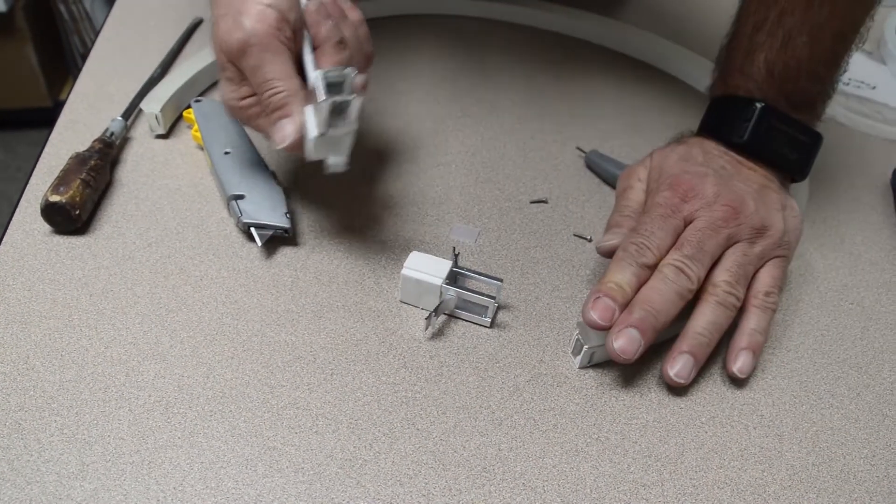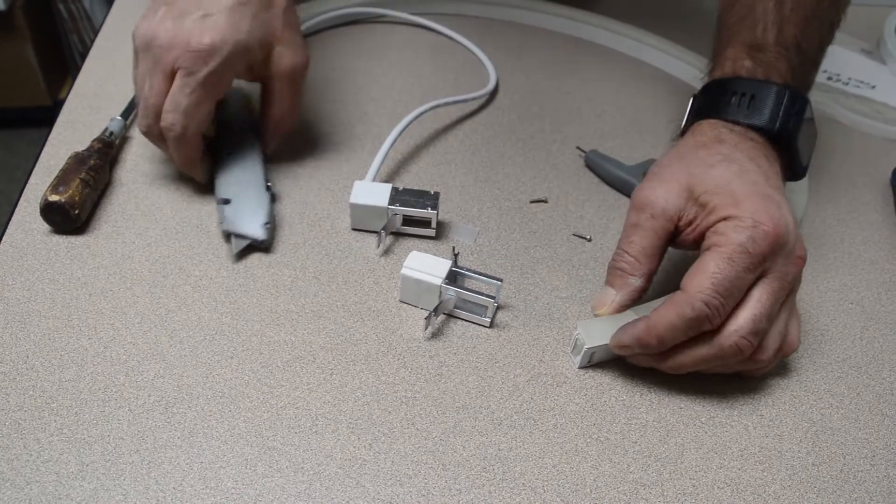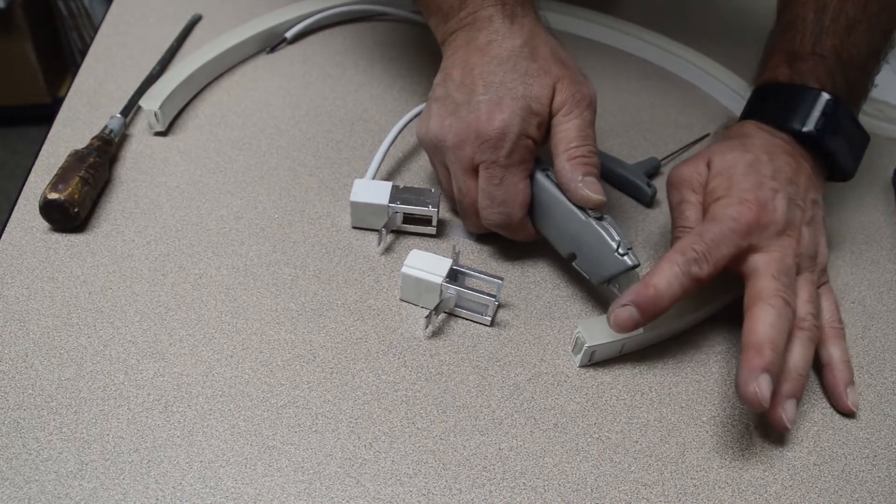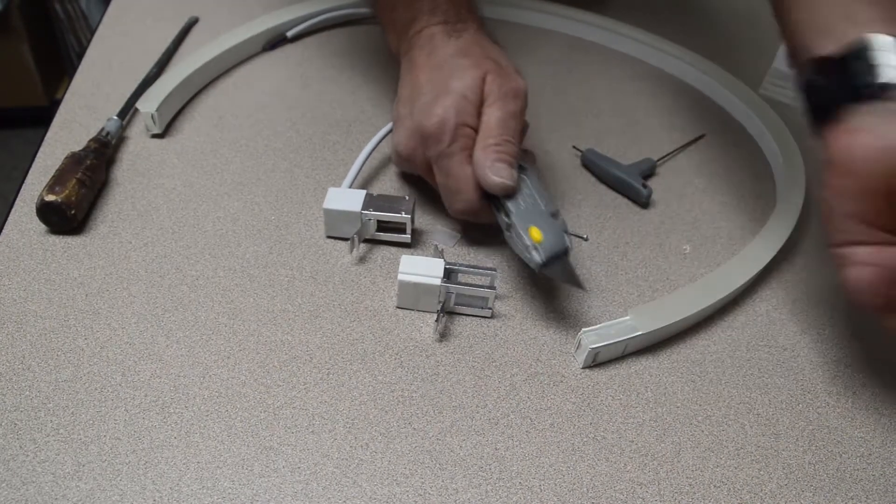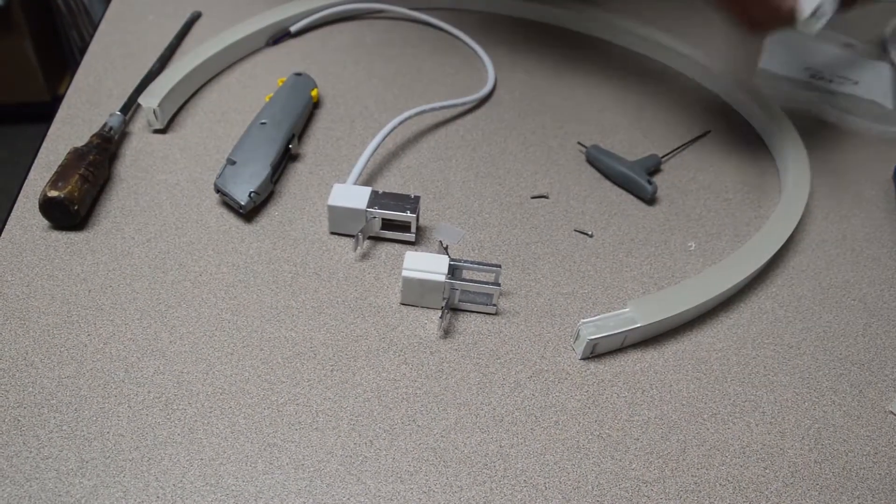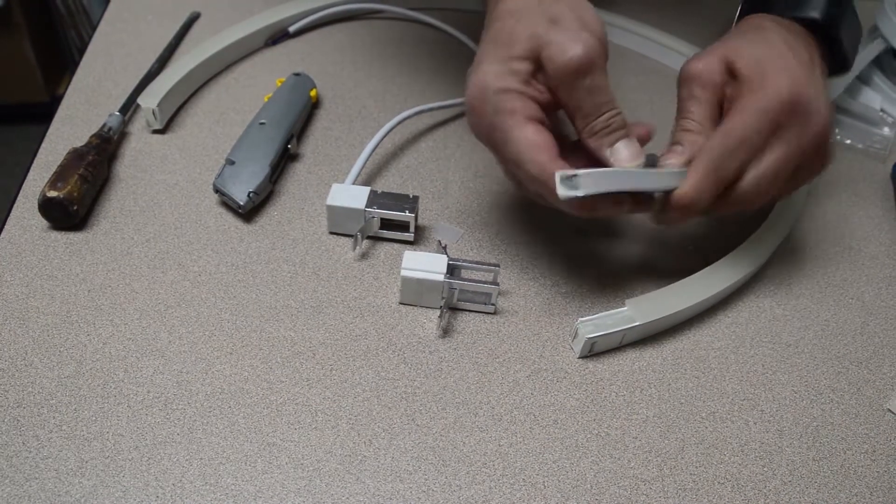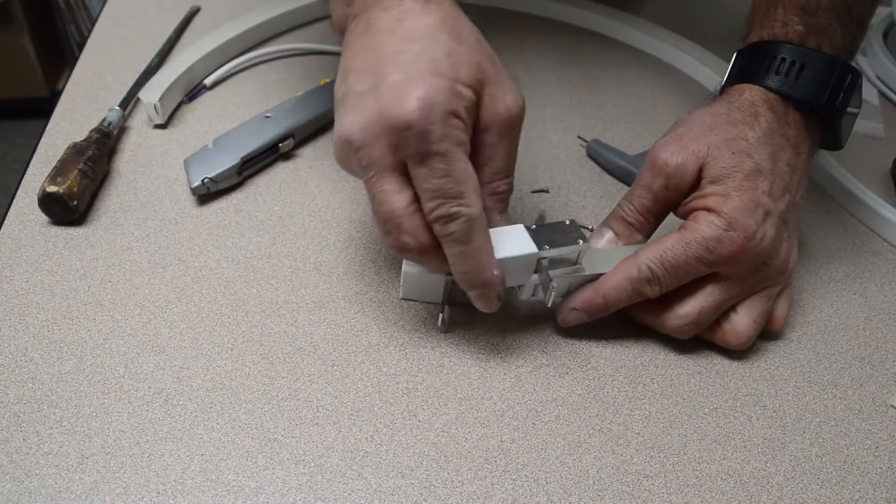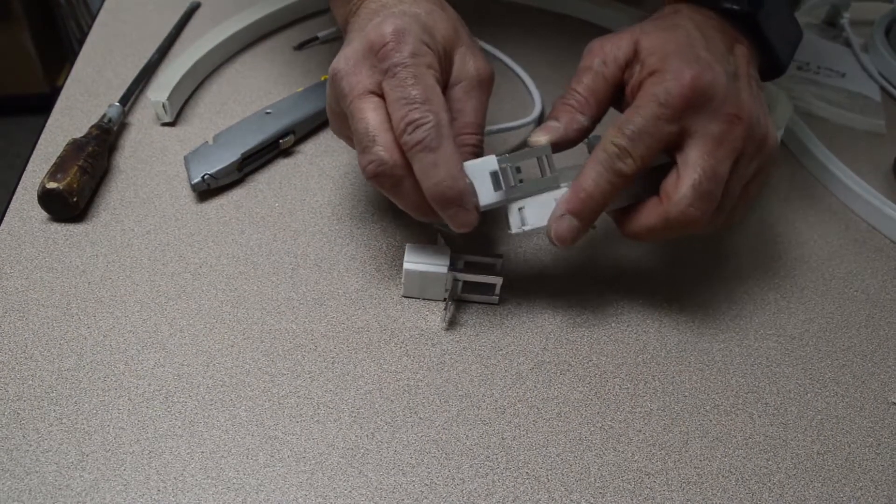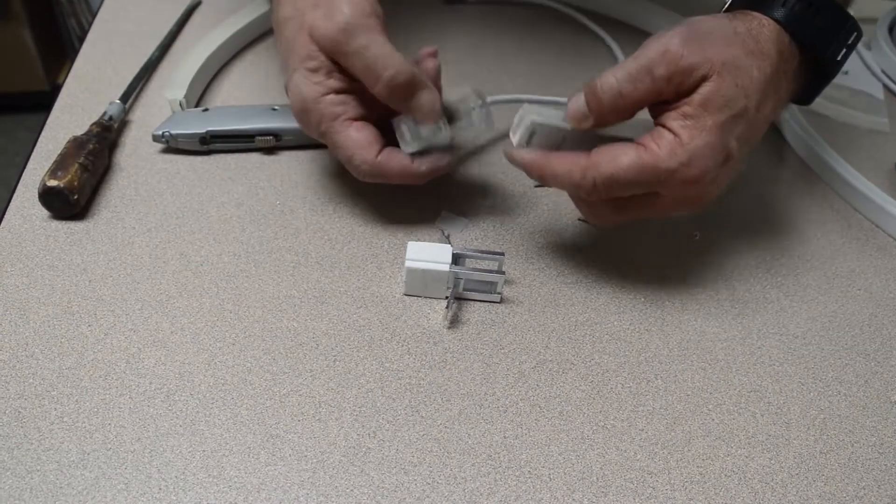If you're using domed material, you have to remove a section of the dome material to make room for the connector. You cut down and across with a knife and this makes it like the flat material, which you don't have to trim to do this process. Once you have that trimmed back the length you need for the connector, the process is the same.